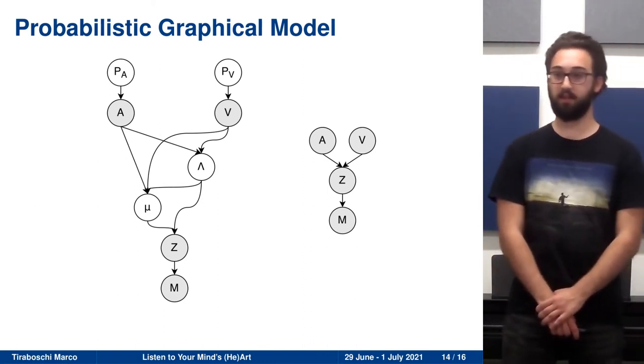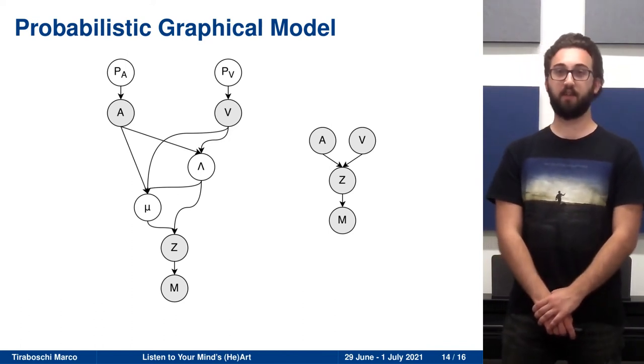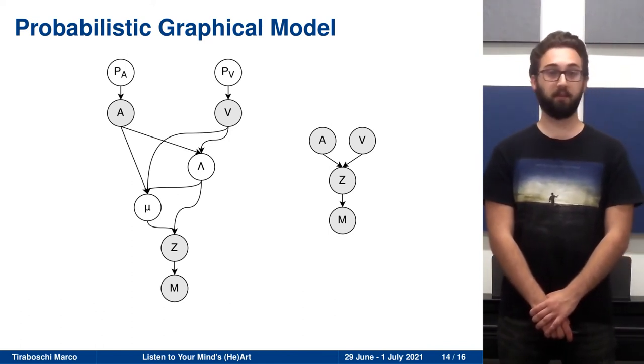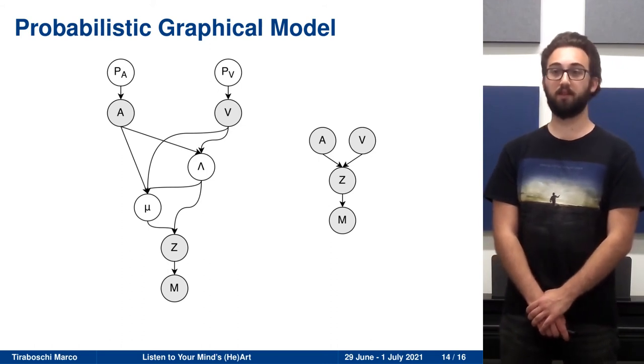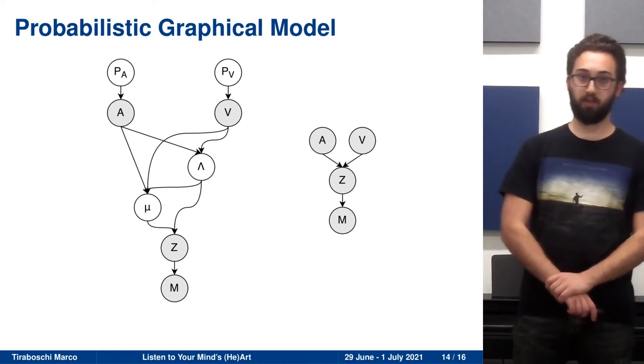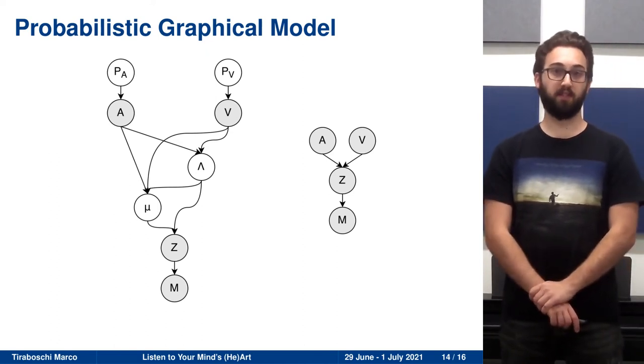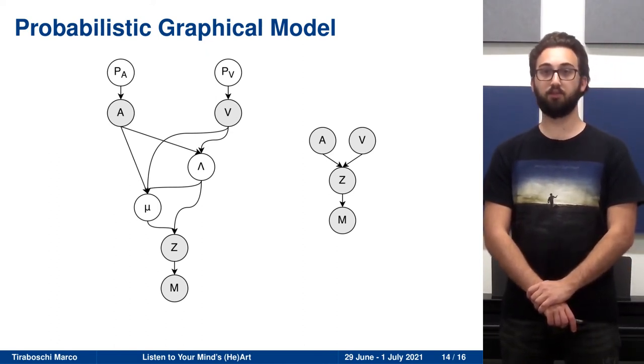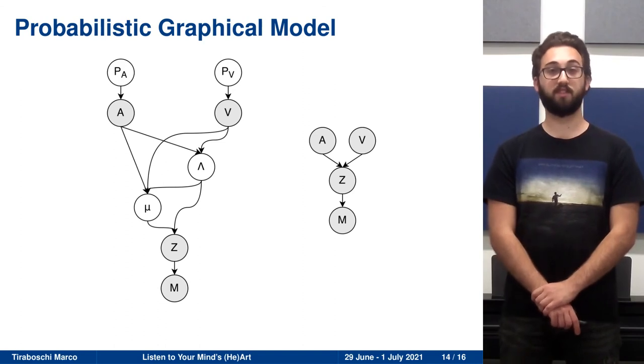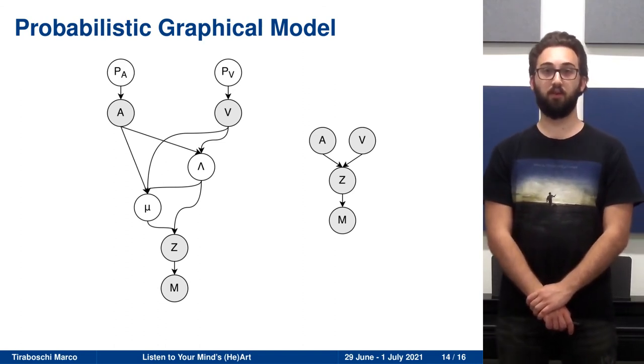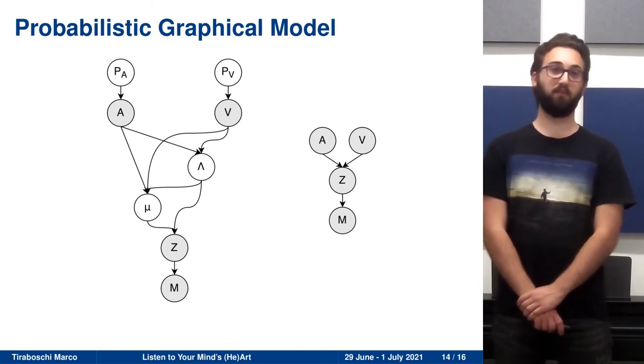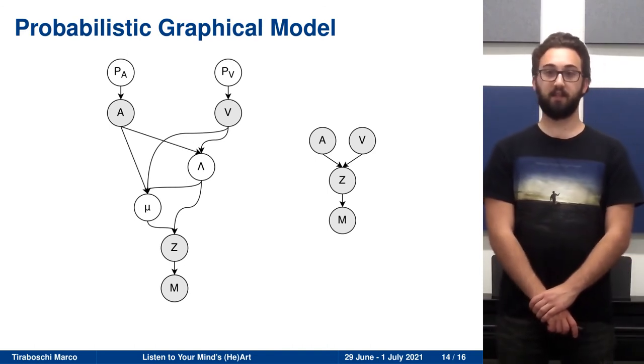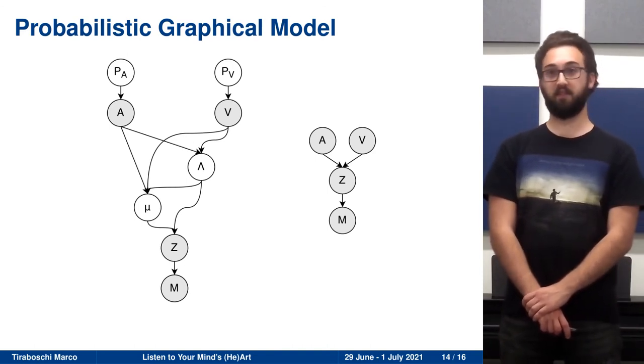Then we simplified this model. We don't actually need the probability parameters of arousal and valence. So we removed them from the model and no modification was needed. But to remove the mean and precision variables, we had to change the model. Because the distribution of a Gaussian variable whose mean and precision are distributed as a normal-Wishart is multivariate T. So in our simplified model on the right, Z is actually distributed as a T distribution.